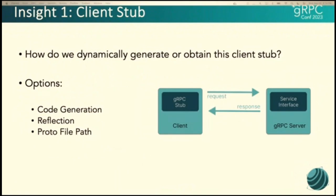So the first insight, the first challenge we ran into was how do we dynamically generate or obtain this client stub? There's a bunch of options to do that. Just to name a few like code generation, reflection, and or giving your profile path. So for code generation, we just ask that the user generate client code from the profiles and share that with us. The pros of that is you could get compiled time checks, which can catch errors early. The cons, it just adds an extra step. You could lead to more versioning challenges.